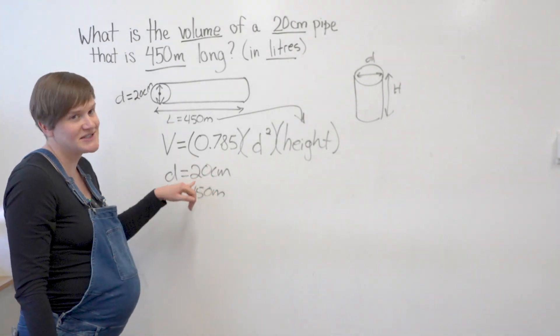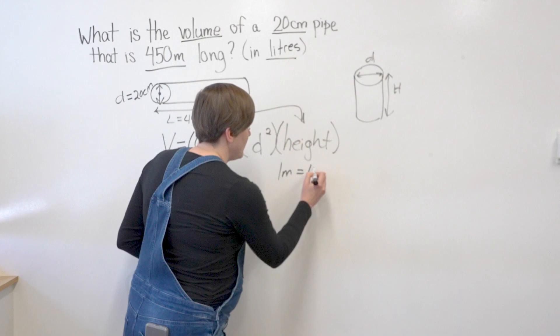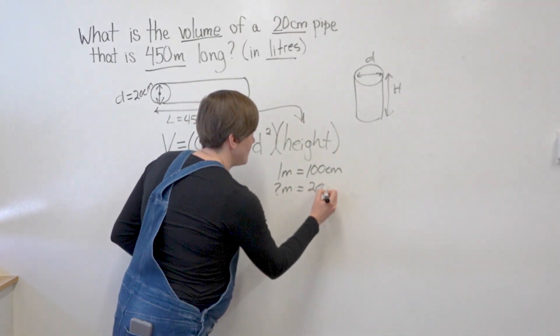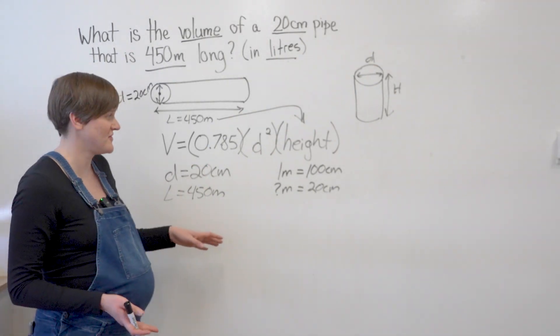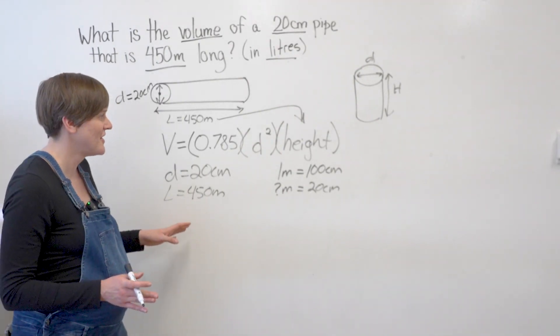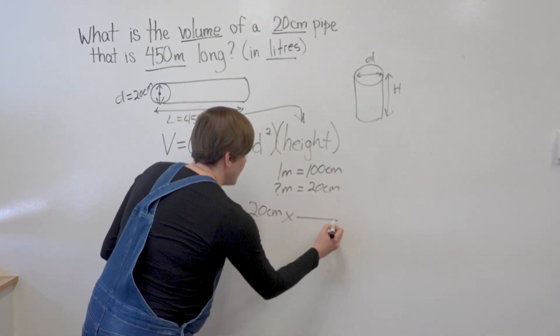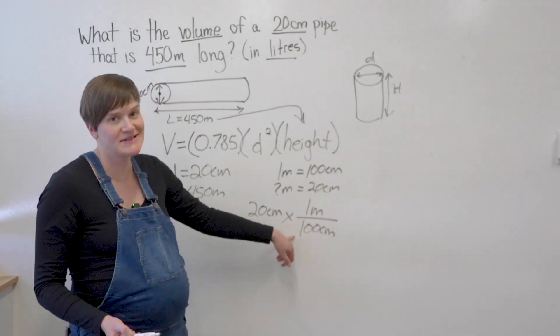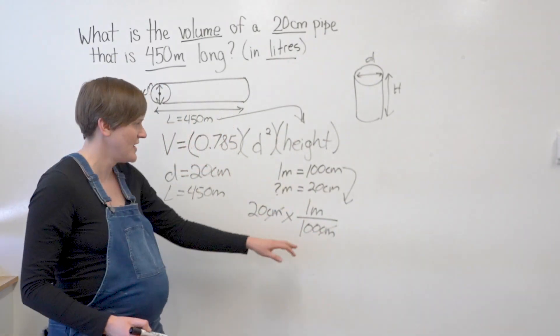So how many meters is 20 centimeters? Well, I know that one meter is 100 centimeters. So how many meters is 20 centimeters? There's lots of different ways of solving this problem. And there's other videos available on doing unit conversions. So I'm going to show one way of doing this. And if it's not the way that you like to use, that's okay, there's lots of different ways of solving a math problem. So I've got 20 centimeters. And if I multiply that by one meter over 100 centimeters, this is the conversion factor. If I multiply that, my centimeters are going to cancel out. And I'm going to be left with meters.